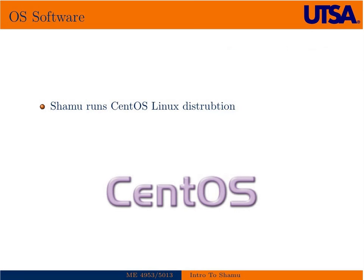The software that Shamu runs is a slightly older version of CentOS, which has to do with the firmware. The reason it hasn't been upgraded to a more modern version of Red Hat or Fedora is due to firmware on the old Sun chipset. It's a very stable operating system, and as we learned in the introduction to Unix, there are many flavors of Linux — in this case we're using CentOS.